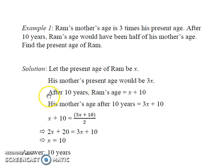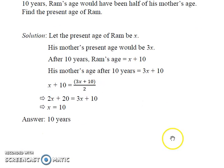Now after 10 years Ram's age would be x plus 10 and his mother's age would be 3x plus 10. And according to the question at this point of time Ram's age is half of his mother's age. Therefore x plus 10 equals half of 3x plus 10. From here it's simple. Multiply 2 on both sides LHS and RHS we get 2x plus 20 equals 3x plus 10 or x equals 10. Therefore Ram's present age is 10 years.